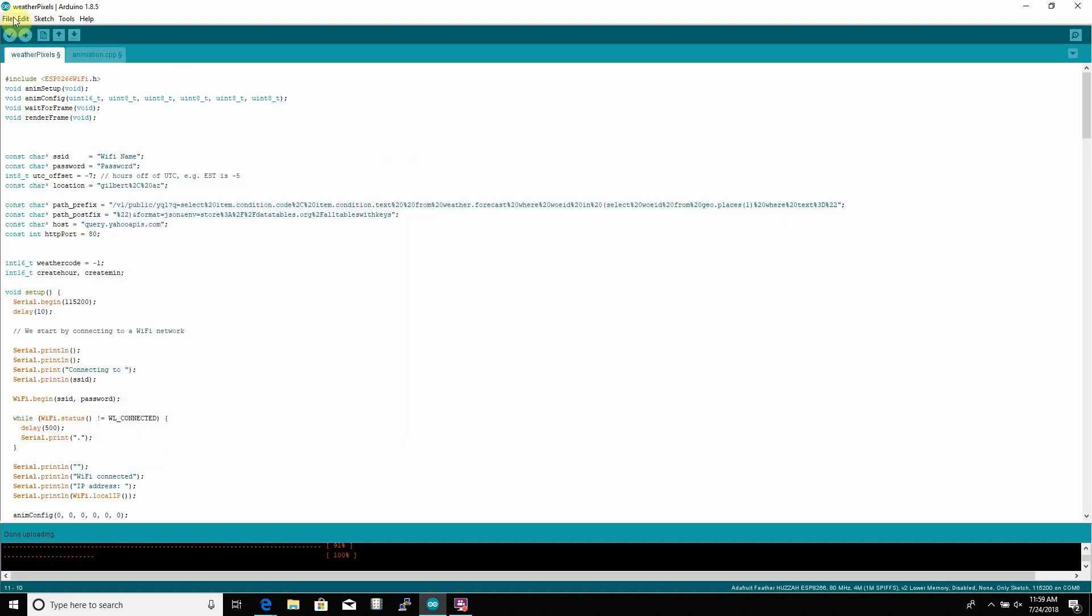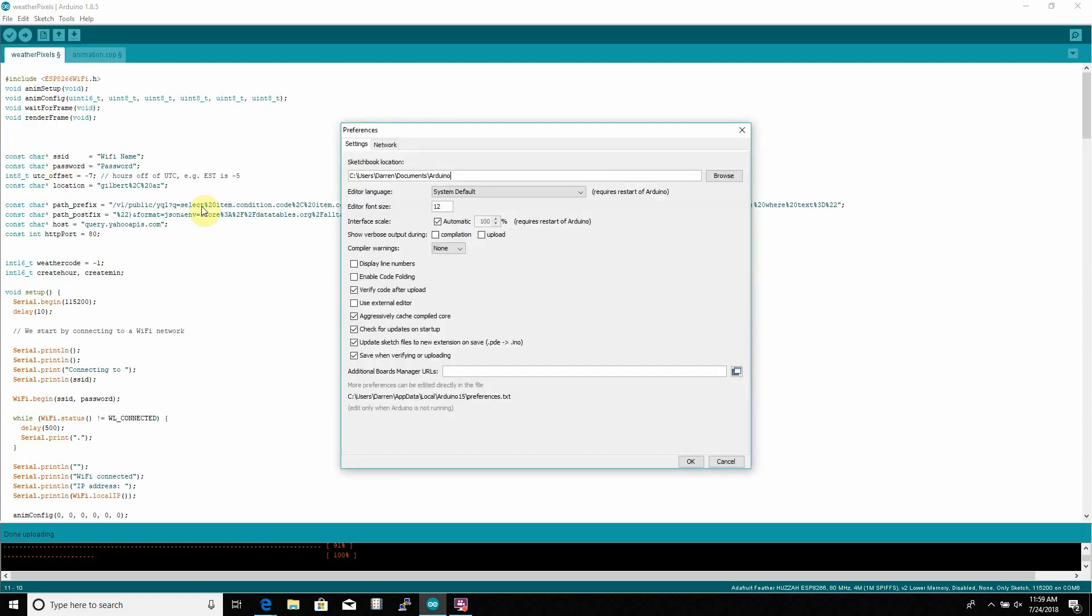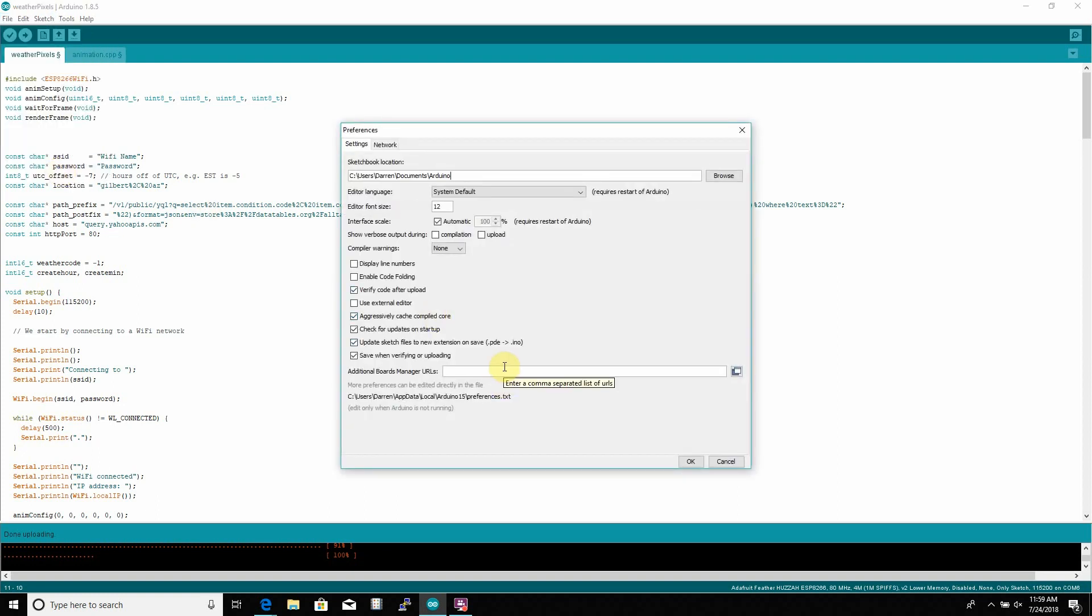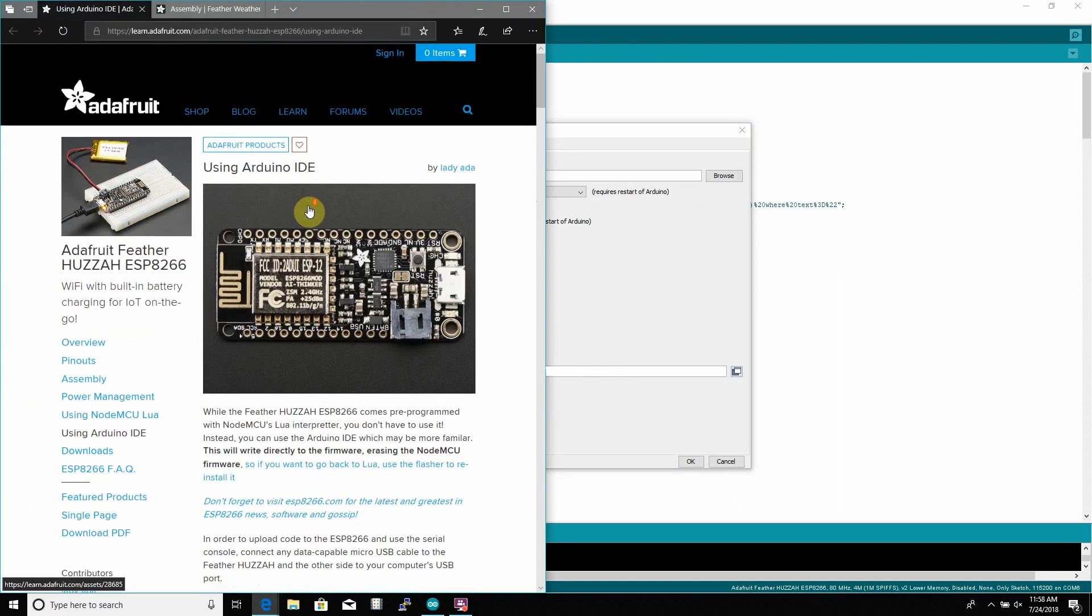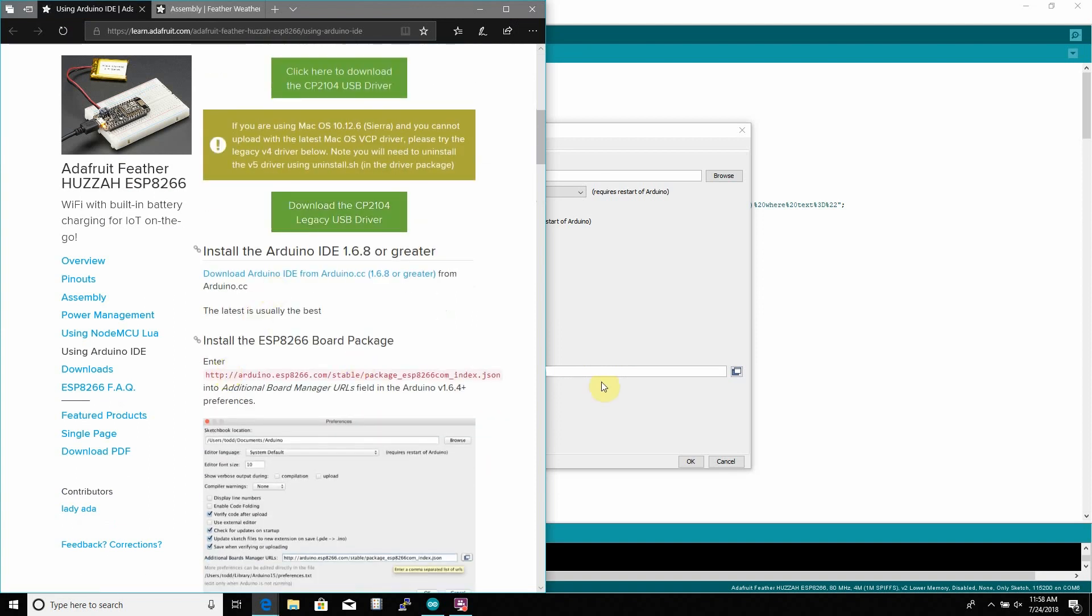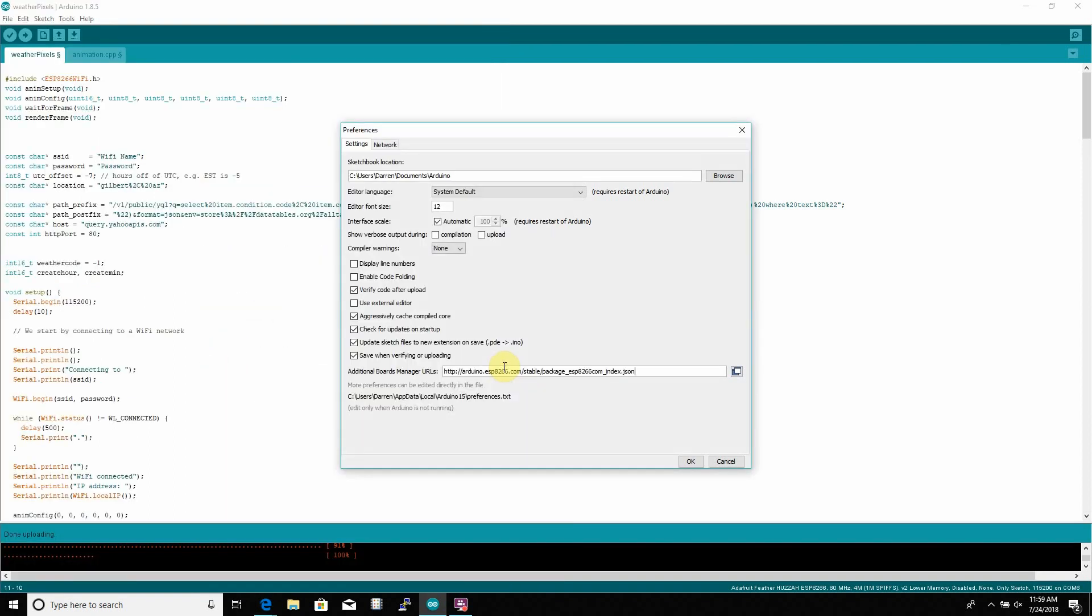First, you go into Preferences. At the bottom is the Additional Board Manager URLs. This URL was given to us on the Adafruit site that is for this project, and just basically copy and paste that link and hit OK.